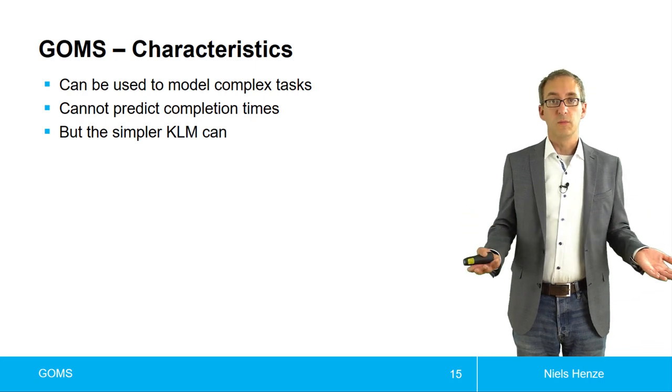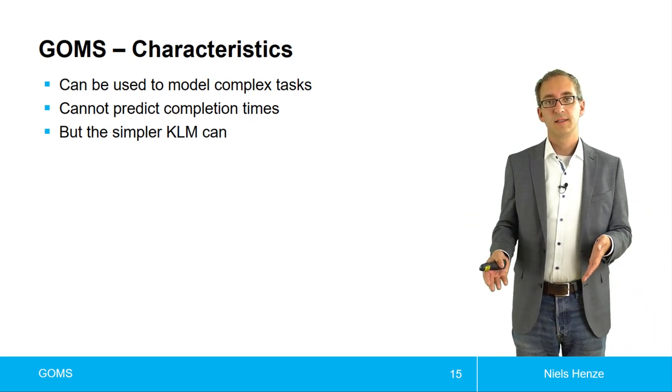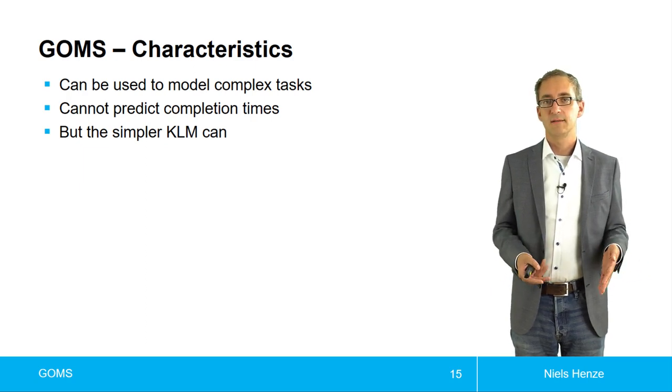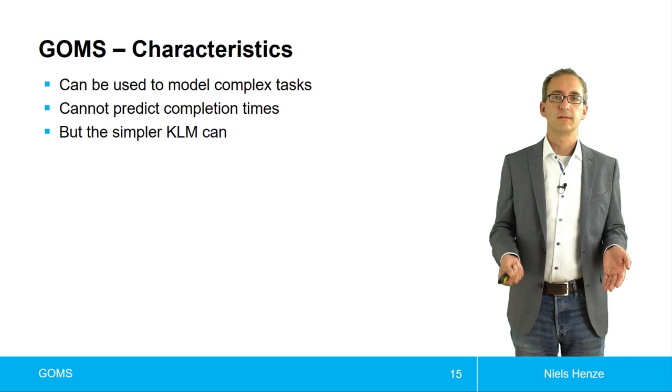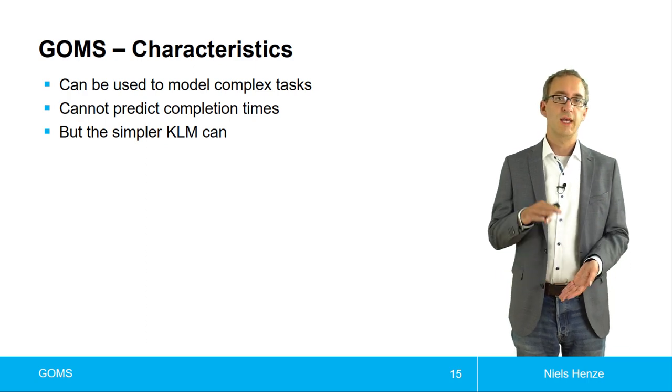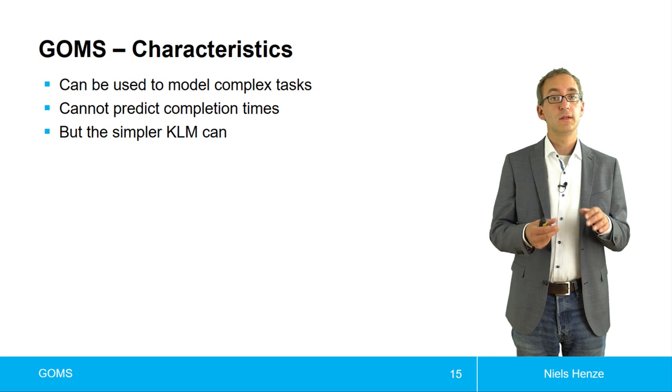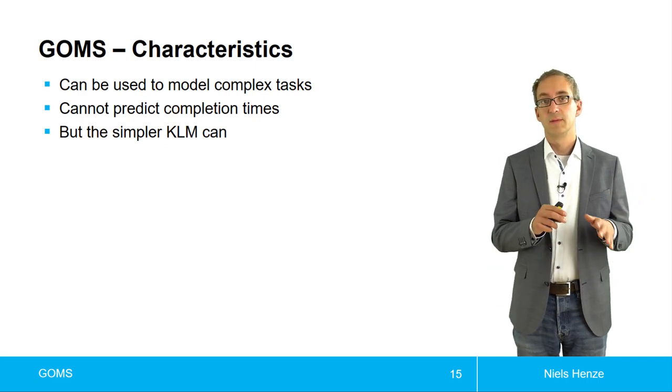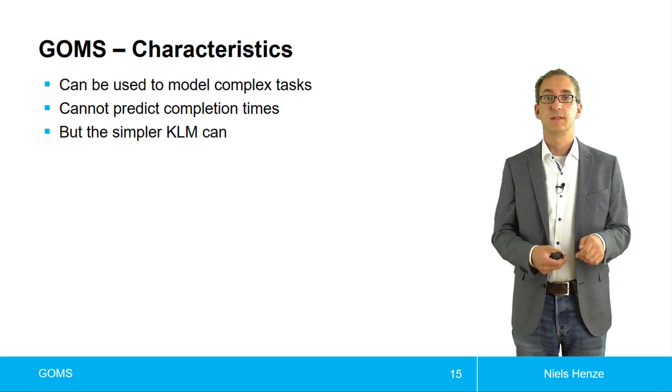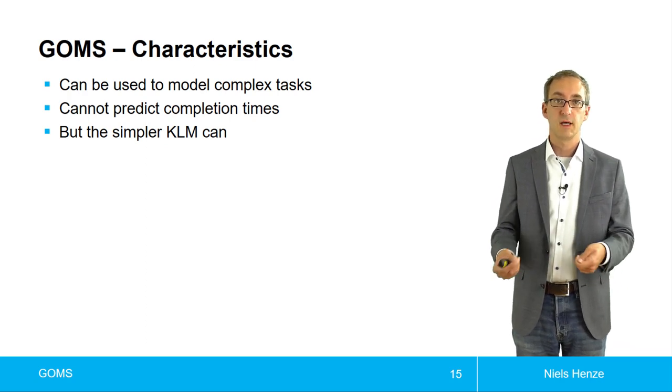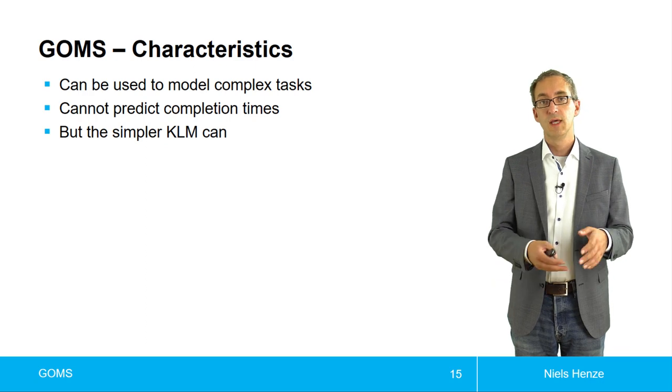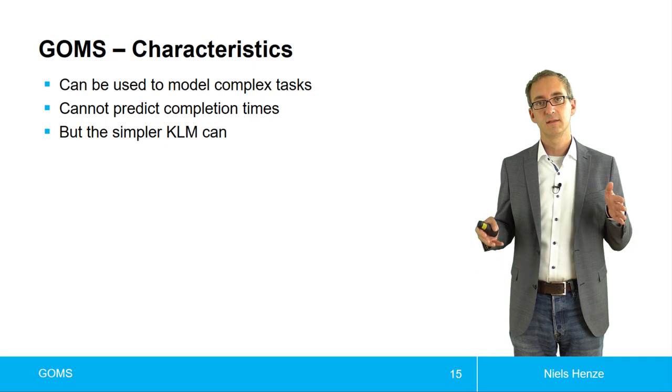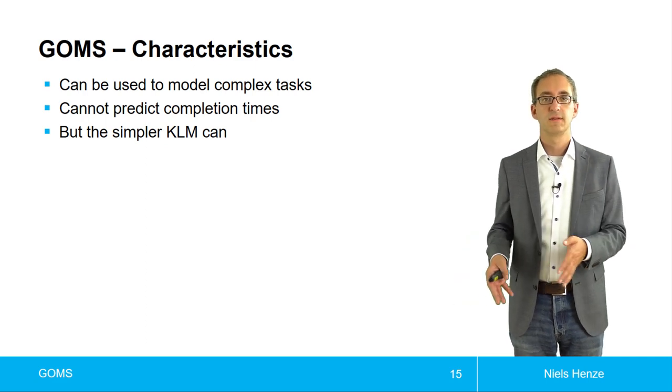So this is basically GOMS and how it works. And now we could apply that for different interfaces. And the nice thing about GOMS is that it can model very complex tasks. Because you can just raise the level of abstractions for the operators. And you can create hierarchies of methods and then operators. But then you can further drill that down using additional goals. So you can decompose your very complex tasks into simpler and simpler goals. And then in the end, you end up with methods and operators.